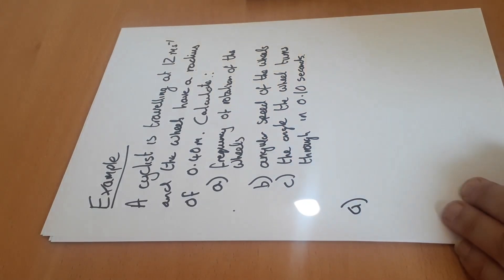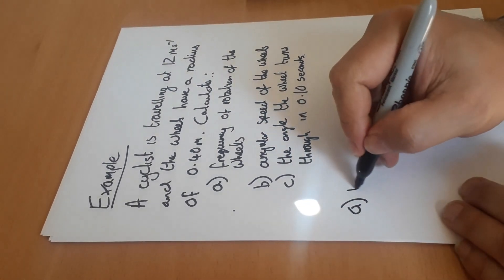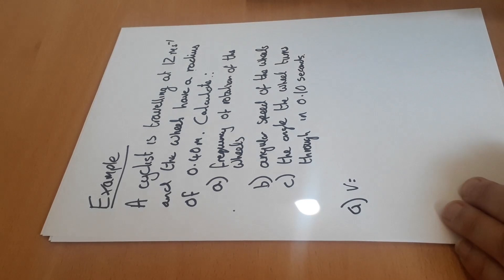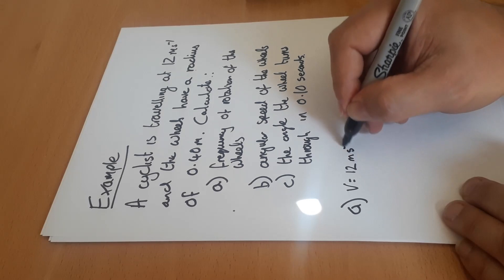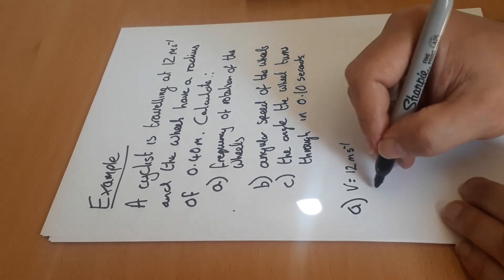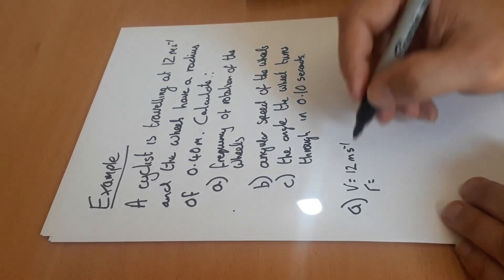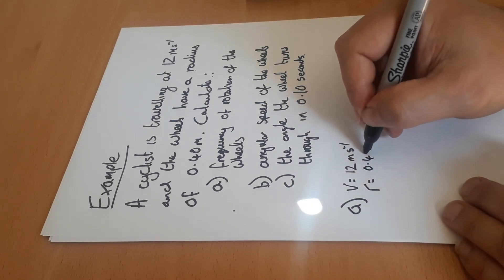So if we think about part a - we know v. Now if the cyclist is going at 12 meters per second, the wheels must be rotating on the edge at 12 meters per second, so we know the tangential velocity must be 12 meters per second. We know r is equal to 0.40 meters.